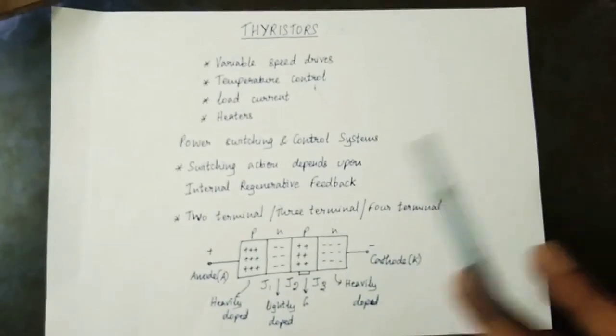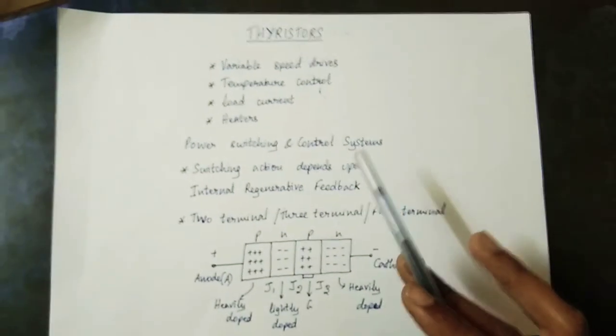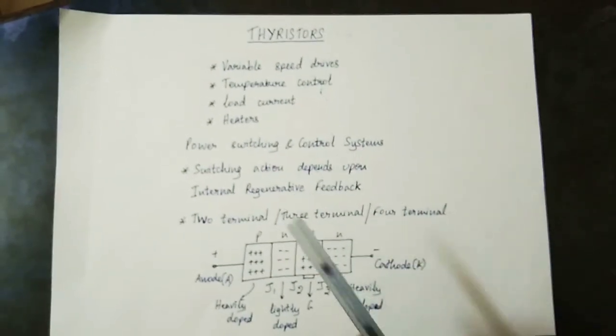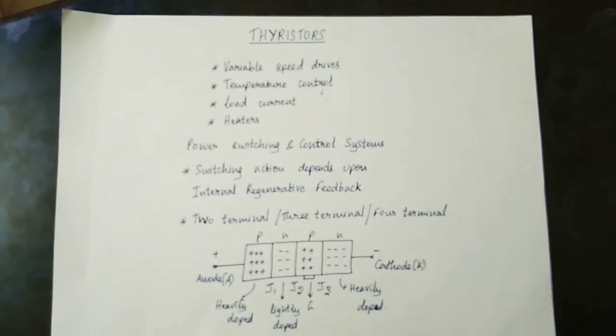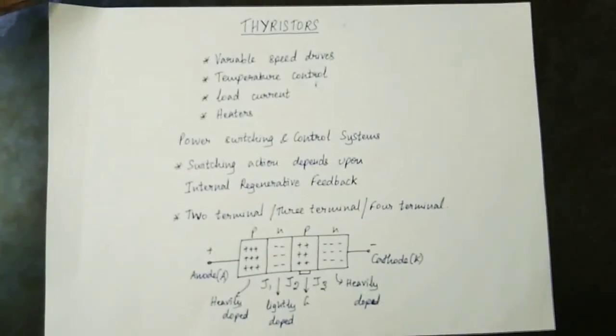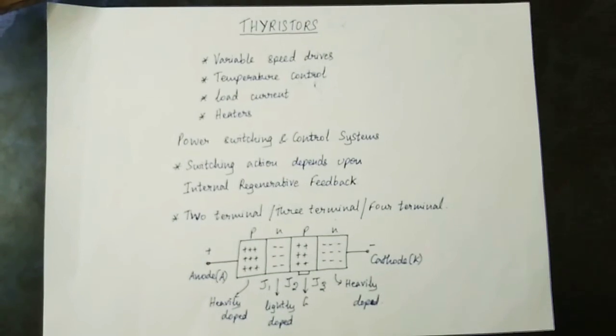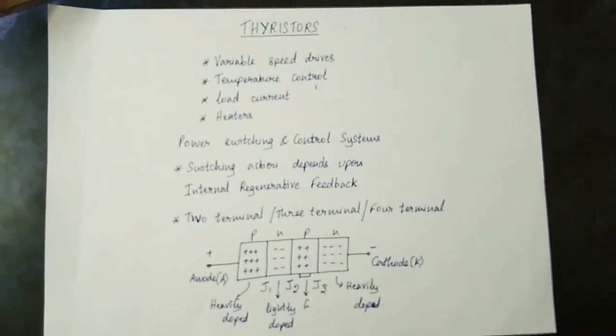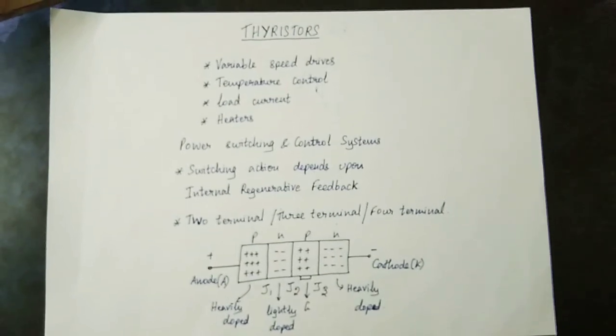There are power switching, control system, and switching actions. There are different types — 2 terminal, 3 terminal, and 4 terminal.